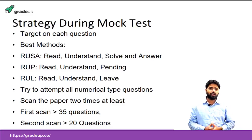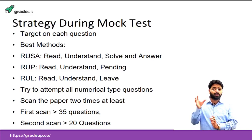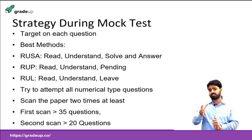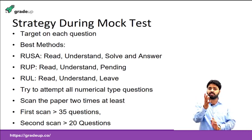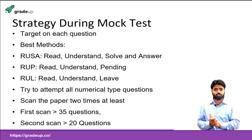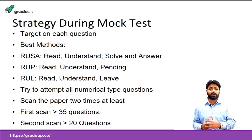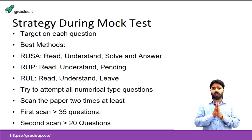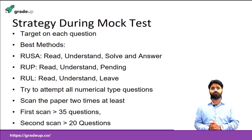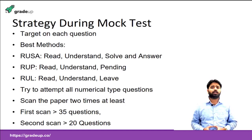The last method is RUL — Read, Understand, and Leave. The question is not clear to you; you are not able to understand it, and even if you try you may not succeed. Do not mark these for the second scan. Your first priority is RUSA, second priority is RUP, and if you have time for a third scan, go for the questions you left that you did not understand.